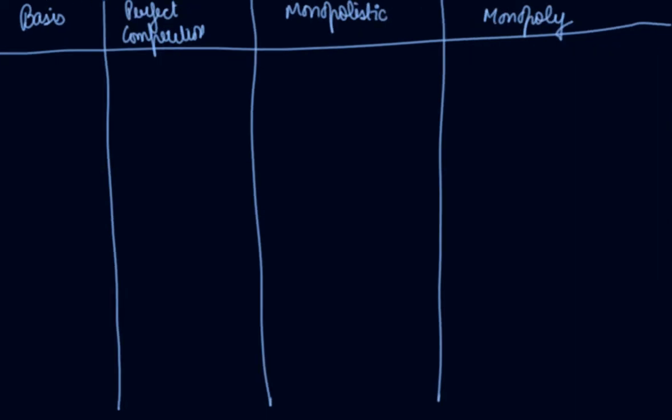The sixth difference we can take here is mobility. Perfect mobility in perfect competition. Perfect mobility again. Imperfect mobility in monopolistic and also imperfect mobility in monopoly.